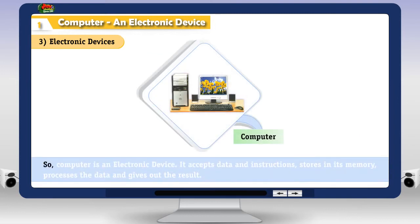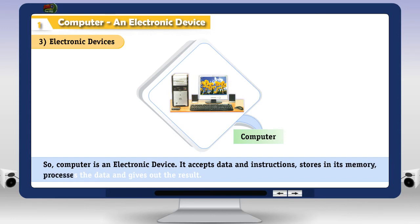So, computer is an electronic device. It accepts data and instructions, stores in its memory, processes the data and gives out the result.